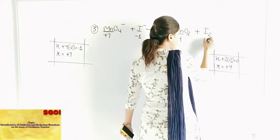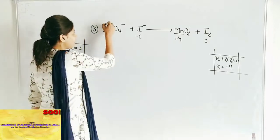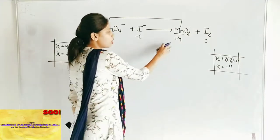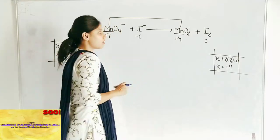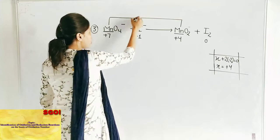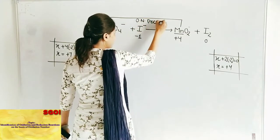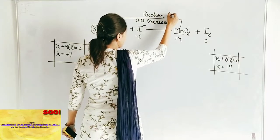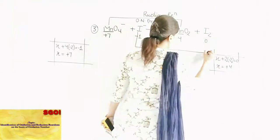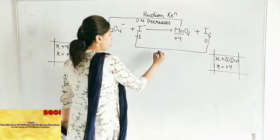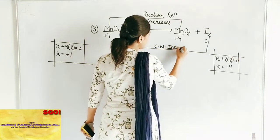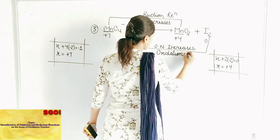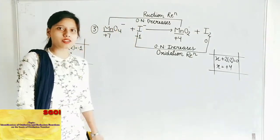Now compare the oxidation numbers. In the formation of MnO2 from MnO4 minus, oxidation number of Mn is decreased by 3 units — from plus 7 to plus 4 — so oxidation number decreases, meaning this reaction is a reduction reaction. In the formation of I2 from I minus, oxidation number increases from minus 1 to 0 — it becomes positive — so this is an oxidation reaction. Hence, we can say that this whole reaction is a redox reaction.